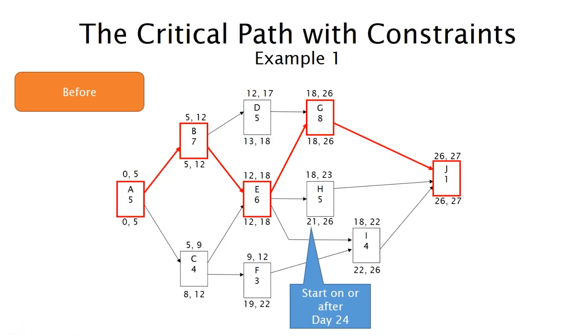Critical path with constraints. So what we're going to do here in this situation, in this simple network, is we're going to apply a constraint here to start activity H on day 24. So here's our current critical path A, B, E, G, J. Let's see what happens after we apply a constraint here.